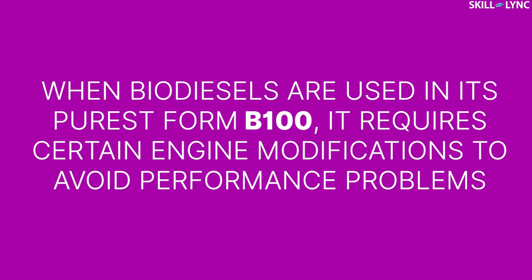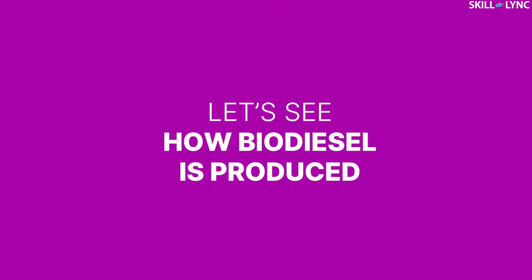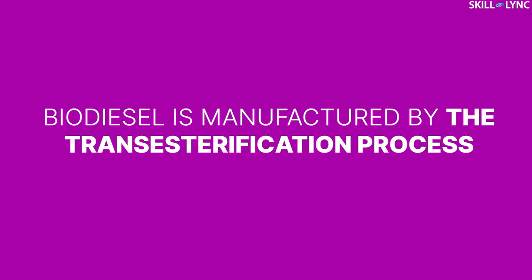But when biodiesel is used in its purest form, that is B100, it requires certain engine modifications to avoid performance problems. Now let's see how biodiesel is produced. As we already mentioned, biodiesel is manufactured by the transesterification process.